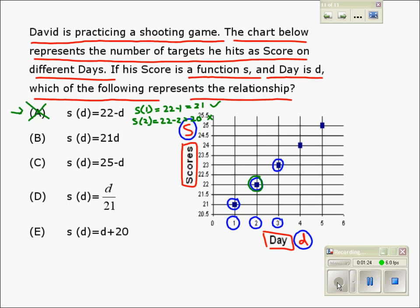Now let's test option B. Option B says S equals 21 times D. Therefore, S for day 1 will be 21 times 1, which is 21. It's working so far.